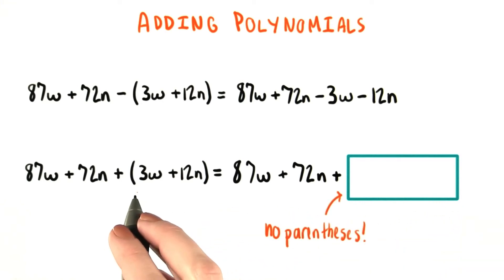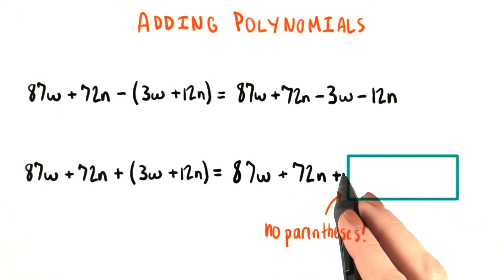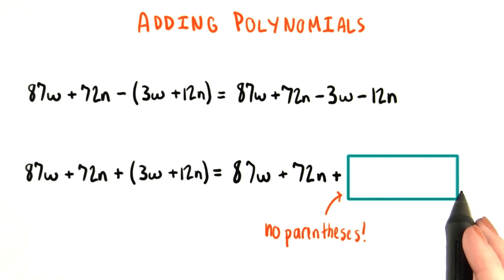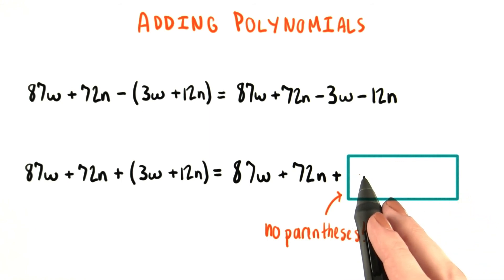The key here is that I want you to get rid of these parentheses that are on the 3w plus 12n, and show me how doing that changes the expression. I've already put a plus sign right here for you. So that means that if you want the first term in the box to be negative, then I'd like you to put a negative sign in front of it.